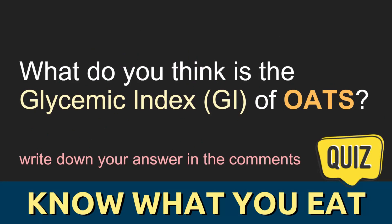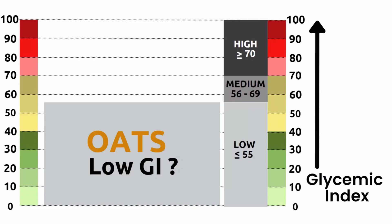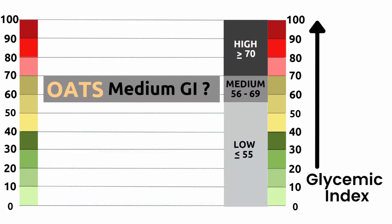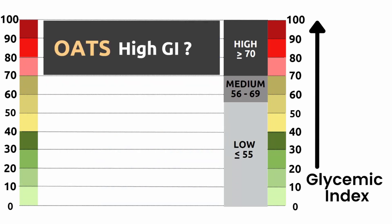Write your answer in the comment section. Do you think oats are low GI? That is, having a GI of 55 or lower? Or do you think oats are medium GI? That is, having a GI of between 56 to 69. Or do you think oats are high GI? That is, having a GI of 70 or higher?